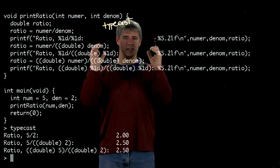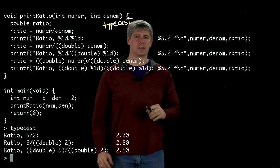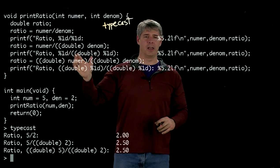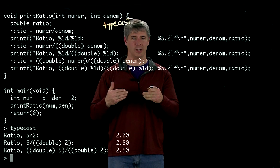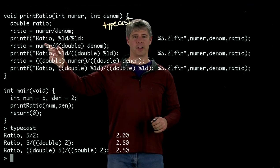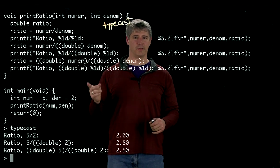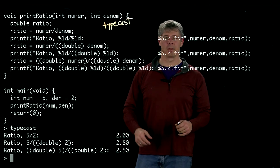Now the division sign sees we're dividing an integer by a double and therefore is going to change numer to be a double so we can divide two doubles. So now we've got essentially 5.0 divided by 2.0, and the ratio there then is 2.5, and that's what gets printed out down here.